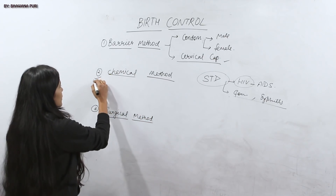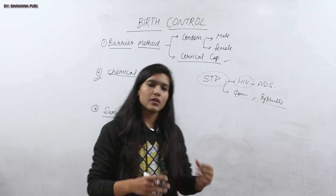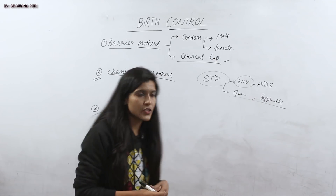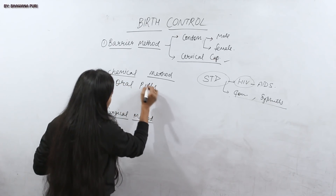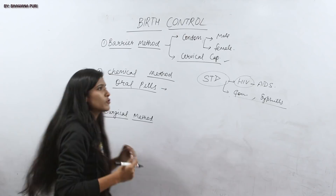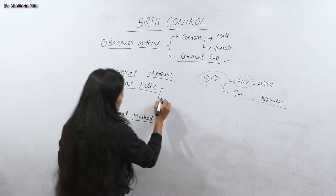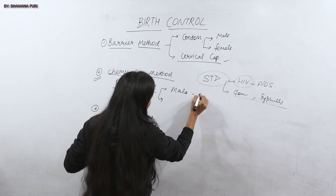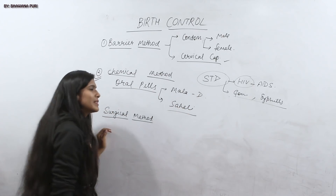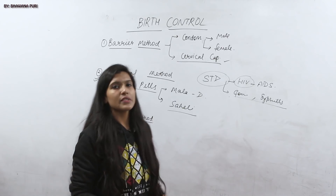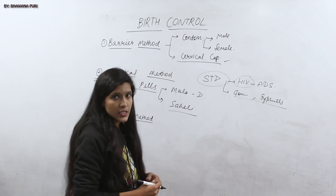Now we will study the second method, which is the chemical method. We will discuss about pills, such as oral pills. These tablets, like Mala-D and Saheli, are taken orally through the mouth. These two tablets are called birth contraceptives, used for birth control.